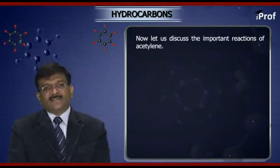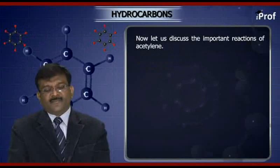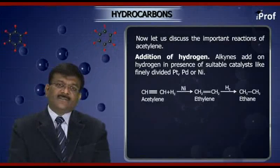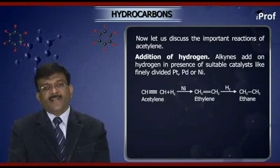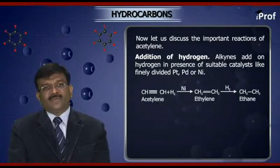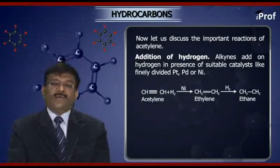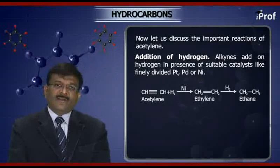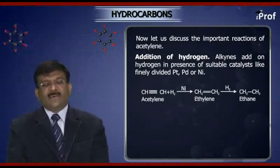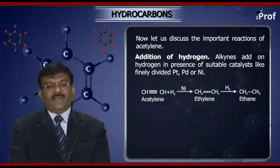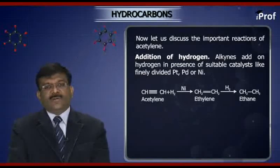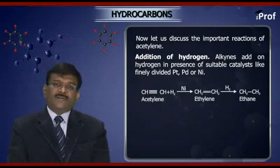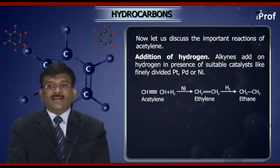Now let us discuss the important reactions of acetylene. The first important reaction is the addition of hydrogen. Alkynes add on hydrogen in the presence of suitable catalysts like finely divided platinum, palladium, or nickel. The reaction: acetylene (CH≡CH) + H₂ in presence of nickel gives ethylene (CH₂=CH₂), which is further combined with hydrogen to give ethane (CH₃–CH₃).